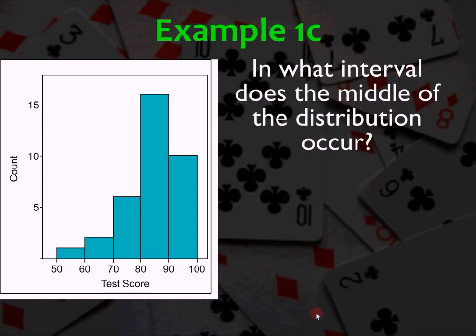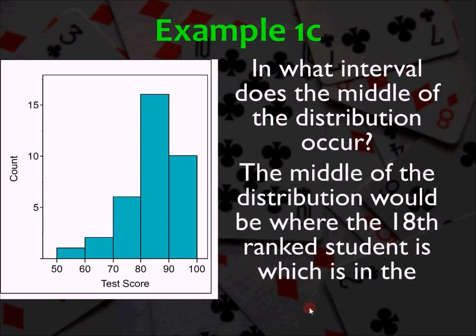Example 1C. In what interval does the middle of the distribution occur? The middle is going to be the value that's going to have the same number of values above that number and below that number. The middle of the distribution here would be the 18th highest student, because there are 35 total, which means for the 18th student, there are 17 above and 17 below. And since there are 10 in this group, the 18th highest has to be in the 80 to 90 group. So that's the answer, the 80 to 89 interval.